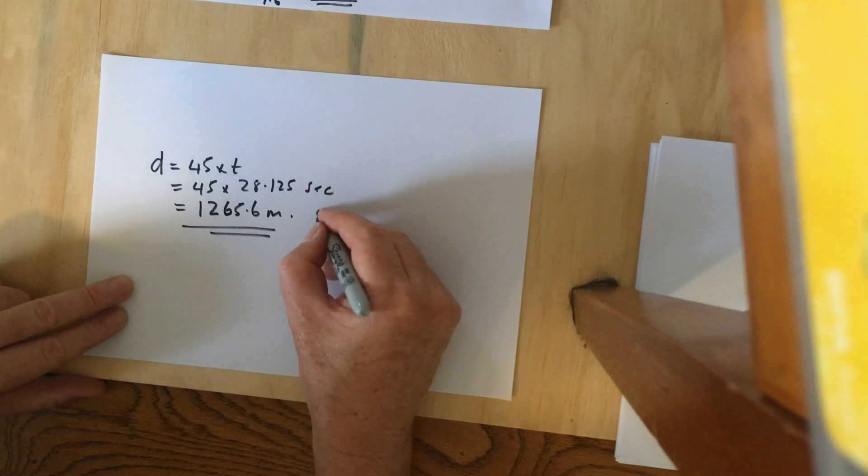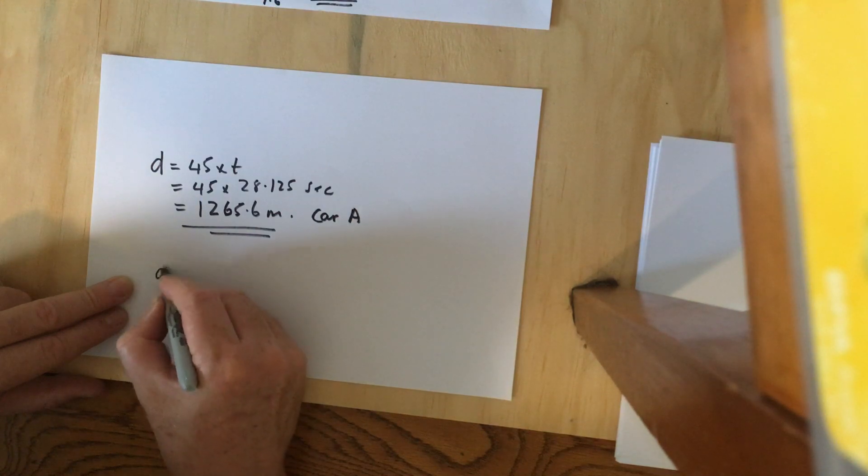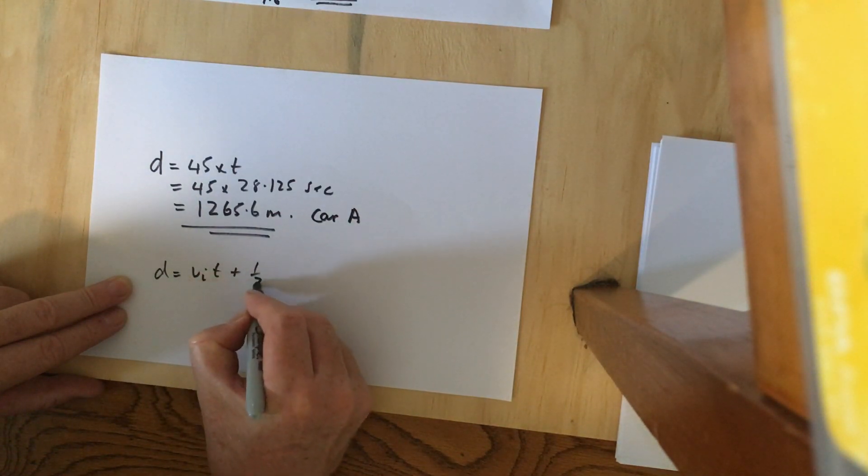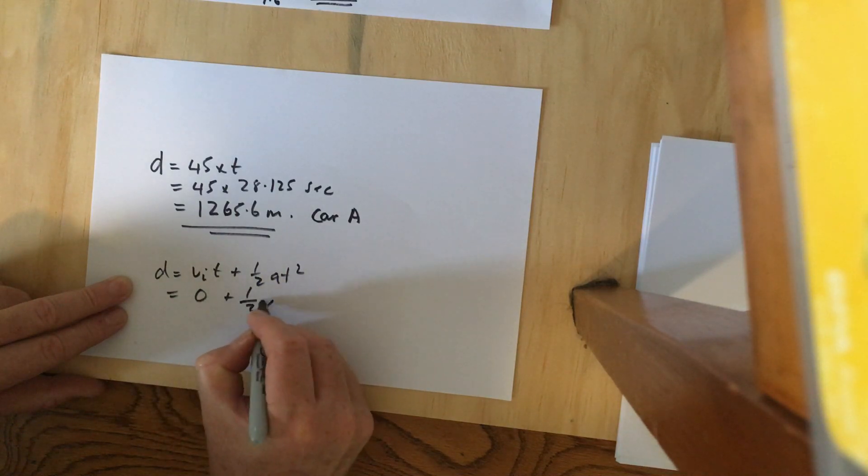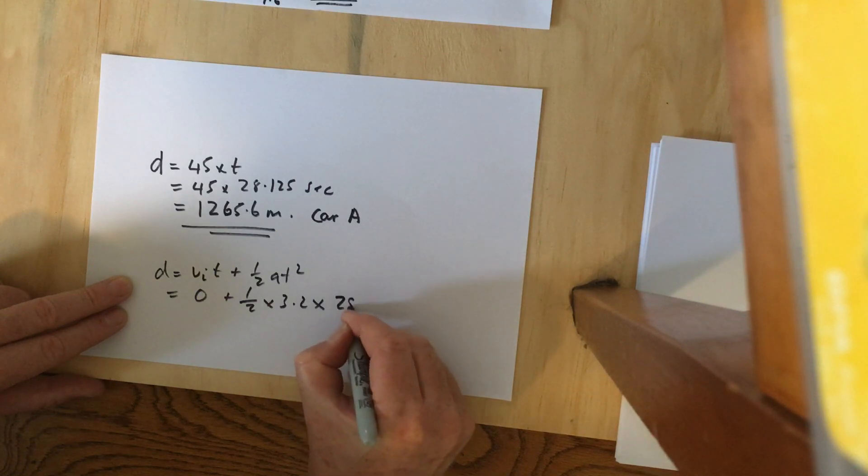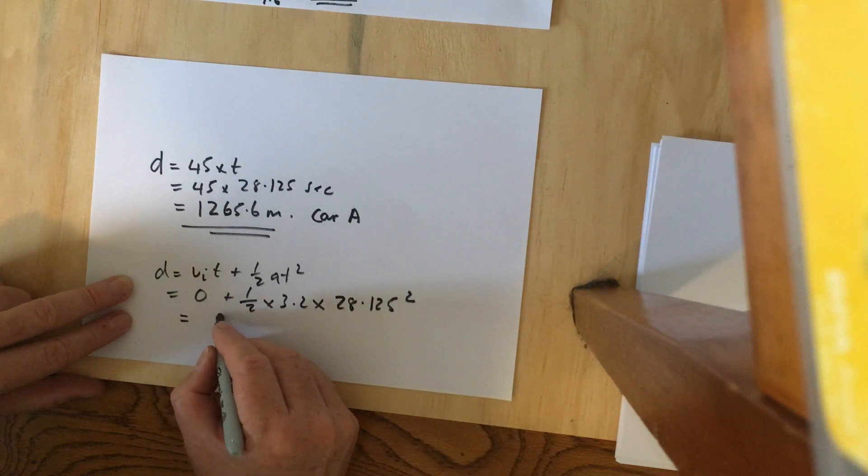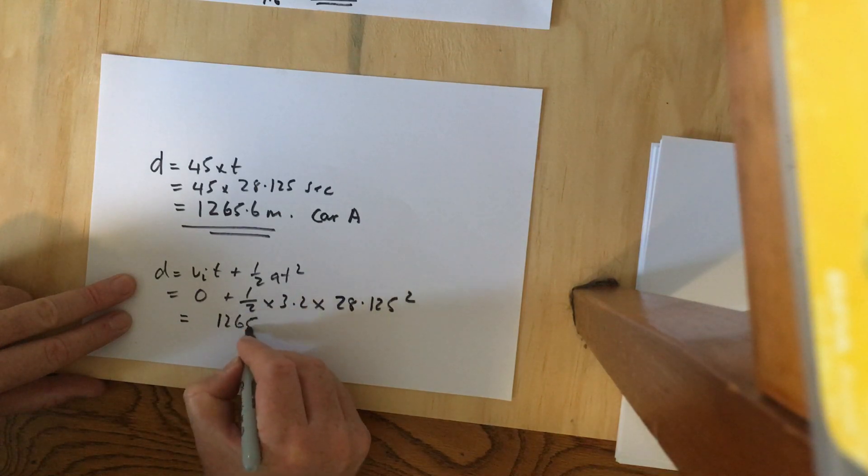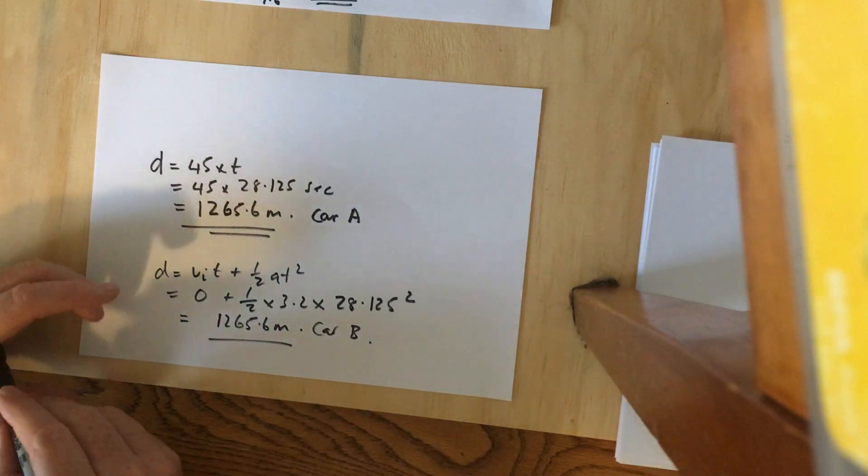For Car B, use the kinematic equation: zero plus a half times 3.2 times 28.125 squared, which also works out to 1,265.6 meters. Thanks very much.